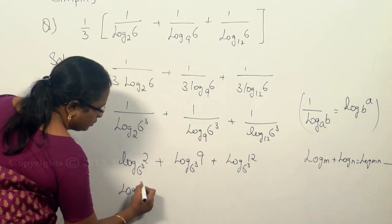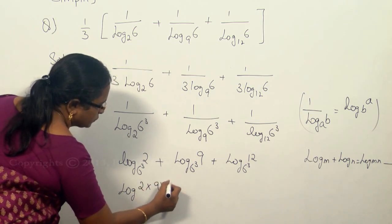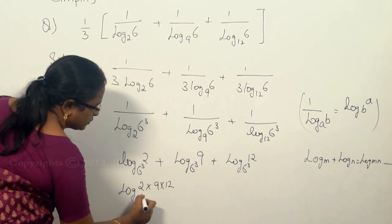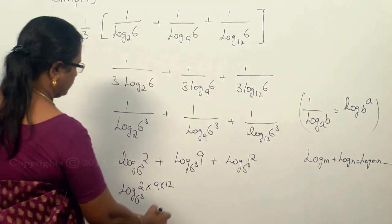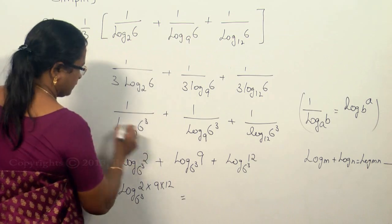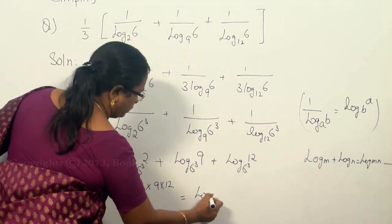So this is log of 2 into 9 into 12 to the base 6 cube, and this can be written as log 216 to the base 6 cube.